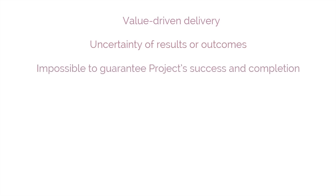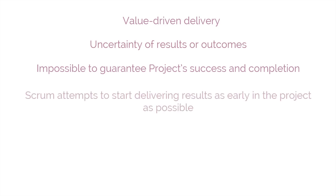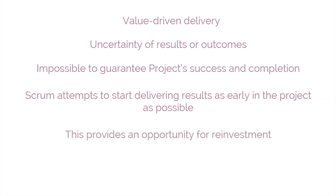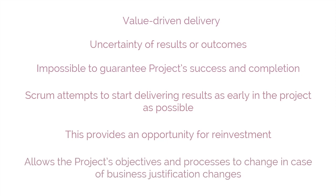One of the key characteristics of any project is the uncertainty of results or outcomes. It is impossible to guarantee project success at completion, regardless of size or complexity. Considering this uncertainty, Scrum attempts to start delivering results as early as possible. This early delivery of results, and thereby value, provides an opportunity for reinvestment and proves the project's worth to stakeholders. Furthermore, Scrum's adaptability allows the project's objectives and processes to change if its business justification changes, and although the product owner is primarily responsible for business justification, other team members also contribute significantly.